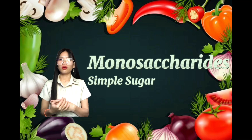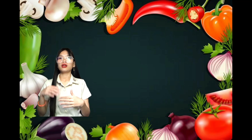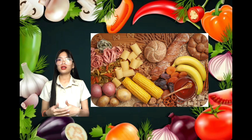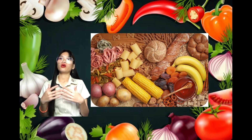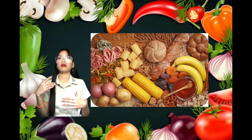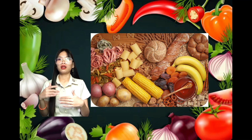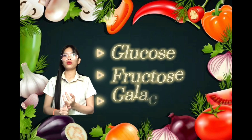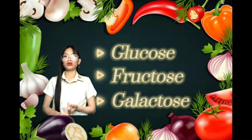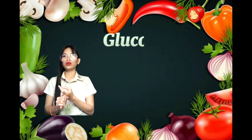Monosaccharide is also called simple sugar. It is a building block of carbohydrates and it is the only carbohydrate that can be absorbed by the body. Monosaccharide has three types: they are glucose, fructose, and galactose.